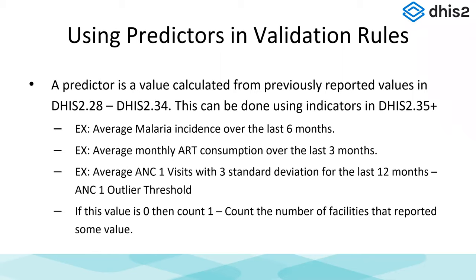The way we actually calculate the outlier threshold is using predictors — we compare the data entered against an outlier threshold calculated by a predictor, and put that predicted value into a validation rule. Predictors have typically only been used for data elements in DHIS2 versions 2.28 to 2.34. Starting in 2.35, you can do some of this analysis using indicators, but since that was just released yesterday, I'll show you how to do it in 2.28 to 2.34.